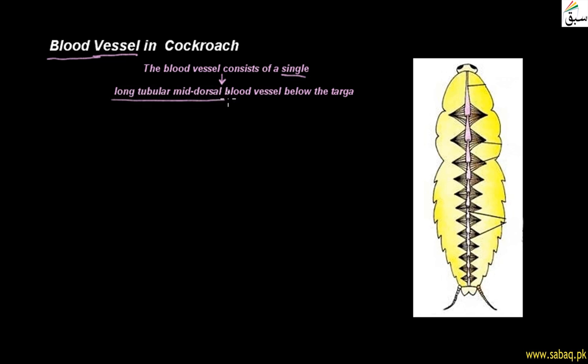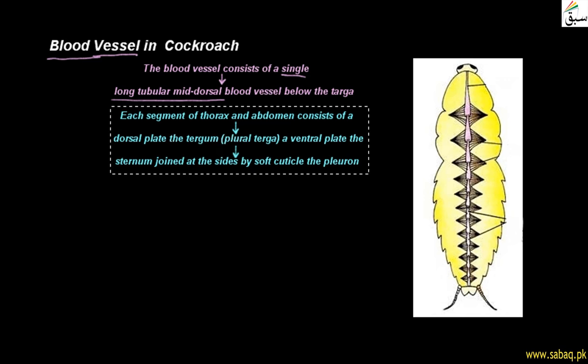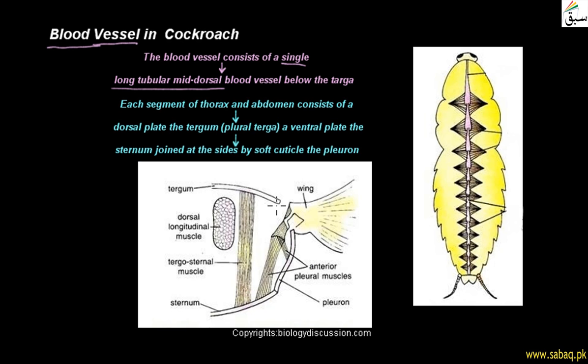Here we are looking at the diagram of the cockroach's blood vessel, and we can see where it is present — below the Terga. Terga is the plural form; the singular is Tergum. Terga refers to the dorsal plate of the segments present in the thorax and abdominal region of the cockroach. There is a long tubular vessel present below the Terga.